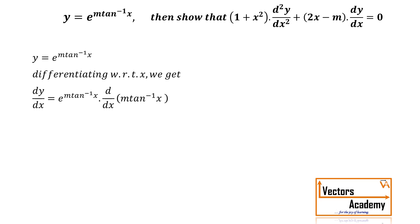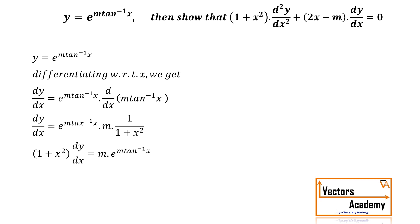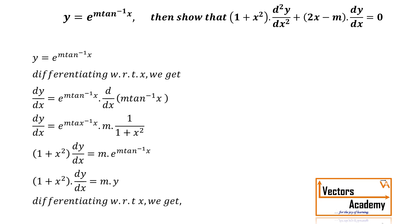The derivative of tan⁻¹x is 1 upon 1 plus x². Now the term in the denominator, that is 1 plus x², we will cross multiply it to the left hand side. The term e raised to m·tan⁻¹x is nothing but the question itself, so we substitute that as equal to y.